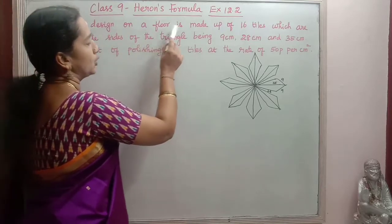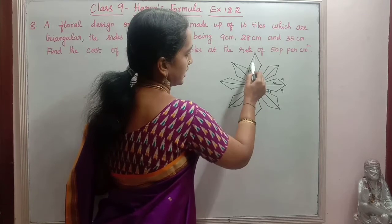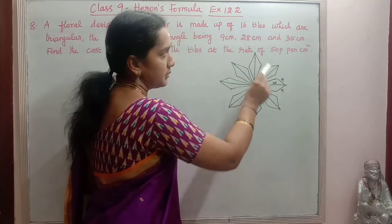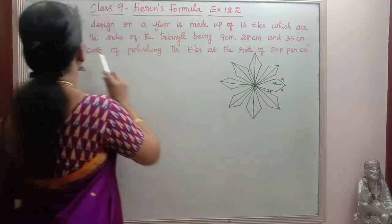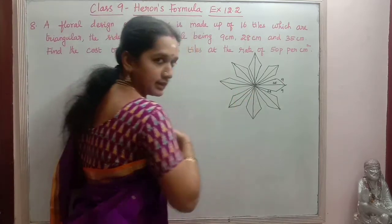A floral design on a floor is made up of 16 tiles. So this is 16 tiles. Here in this, this is a floral design made up of 16 tiles which are triangular. So like this if you see it will be a triangular design.